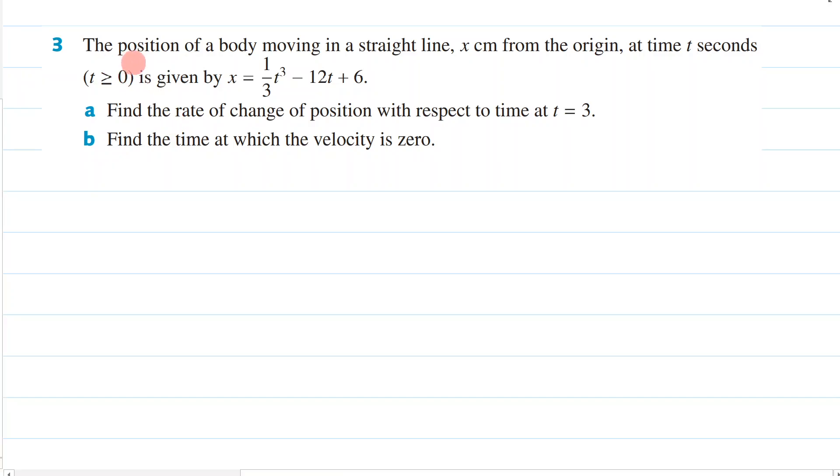It says: The position of a body moving in a straight line, x cm from the origin at time t seconds, where t is greater than or equal to 0, is given by x equals one-third t cubed minus 12t plus 6.